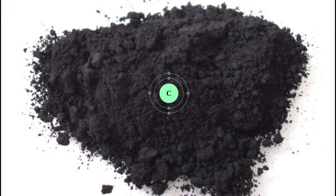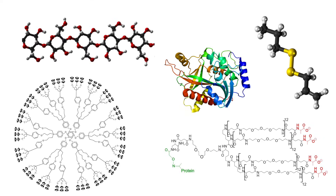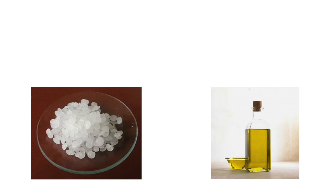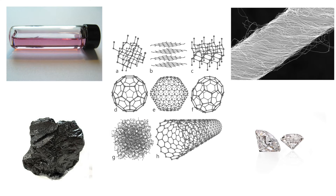Carbon is easily one of the most versatile elements on the periodic table. Combined with other elements it is the backbone for an incredible array of compounds from proteins and polymers to waxes, oils, gases, and so much more. Even on its own it can be shaped into a wide array of materials with an equally wide array of properties.